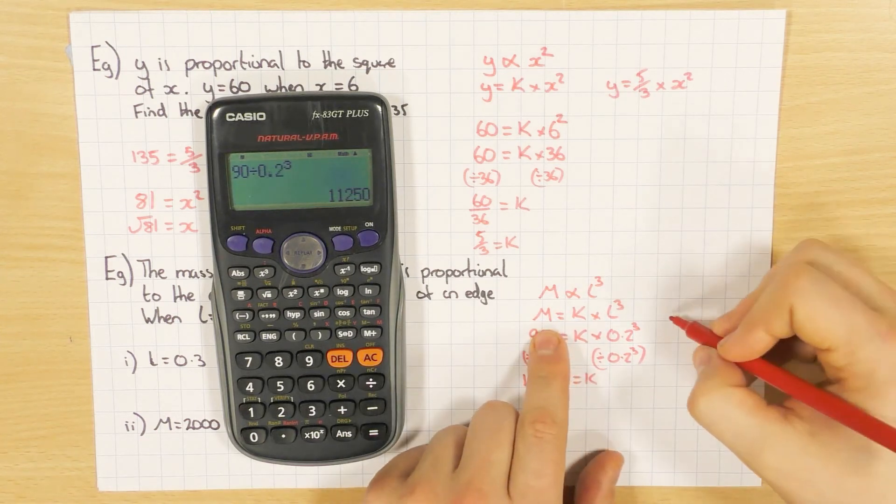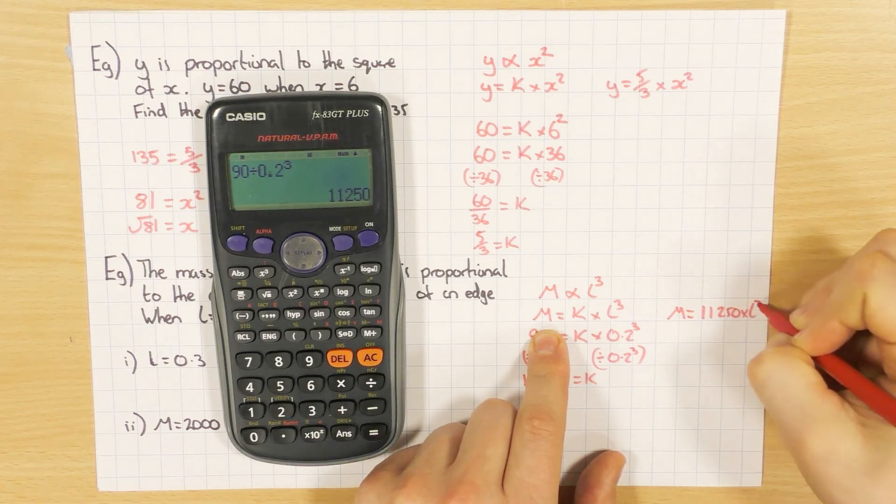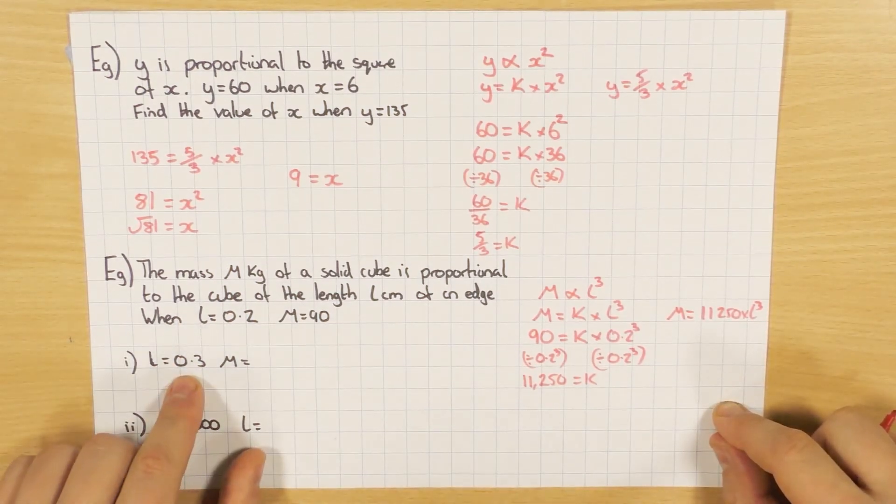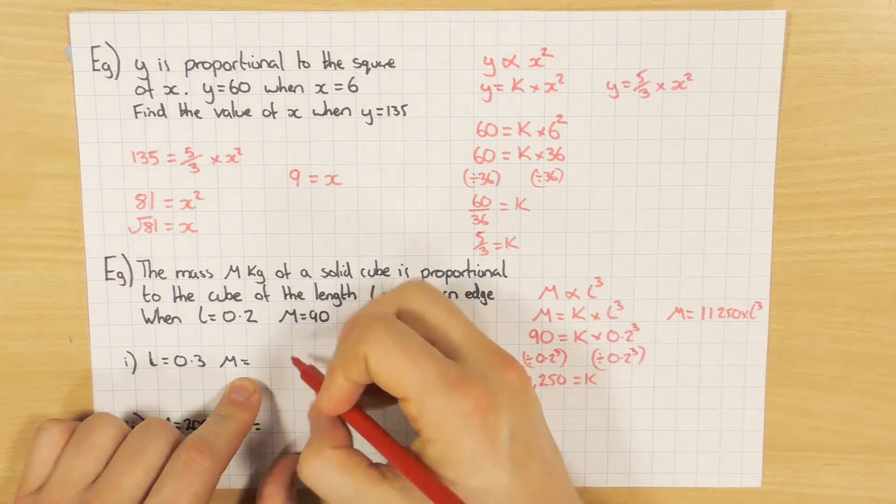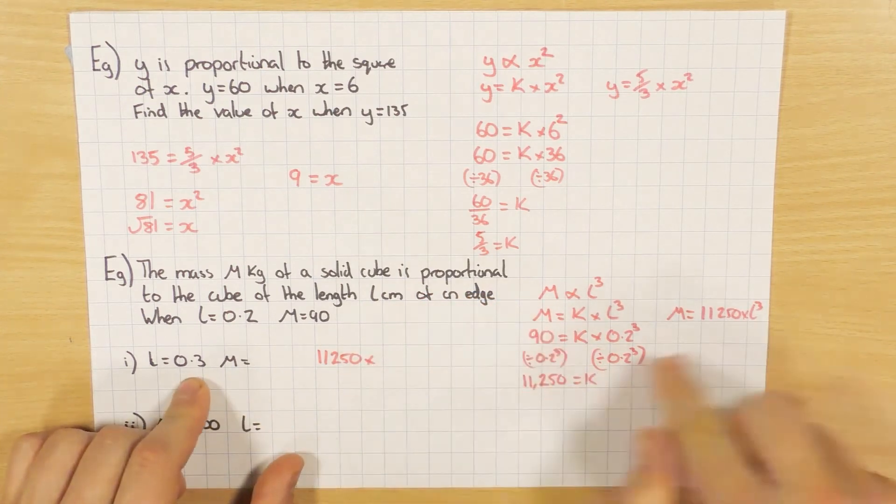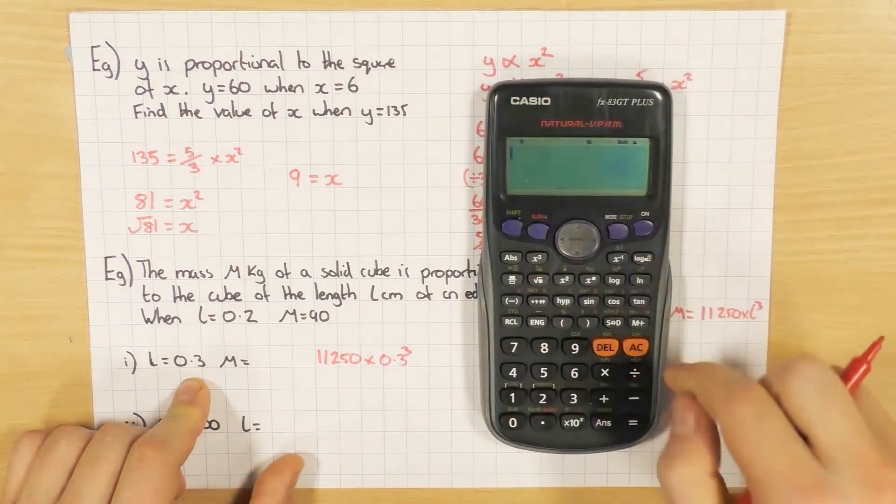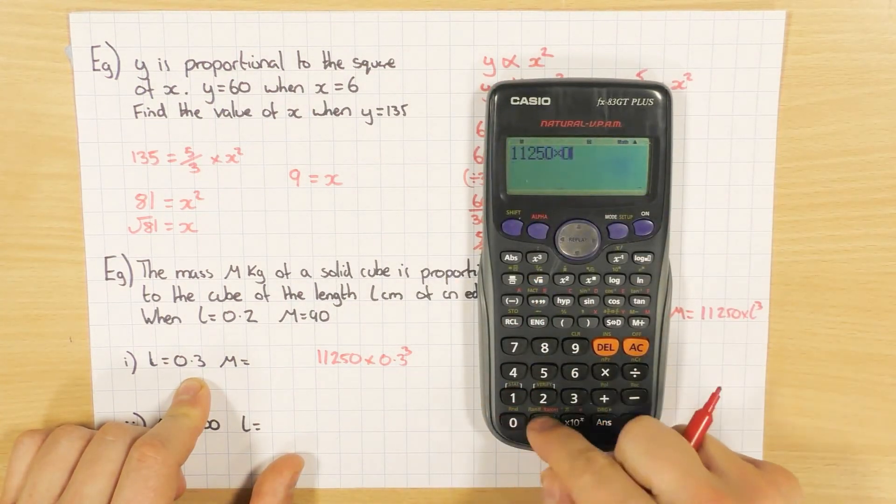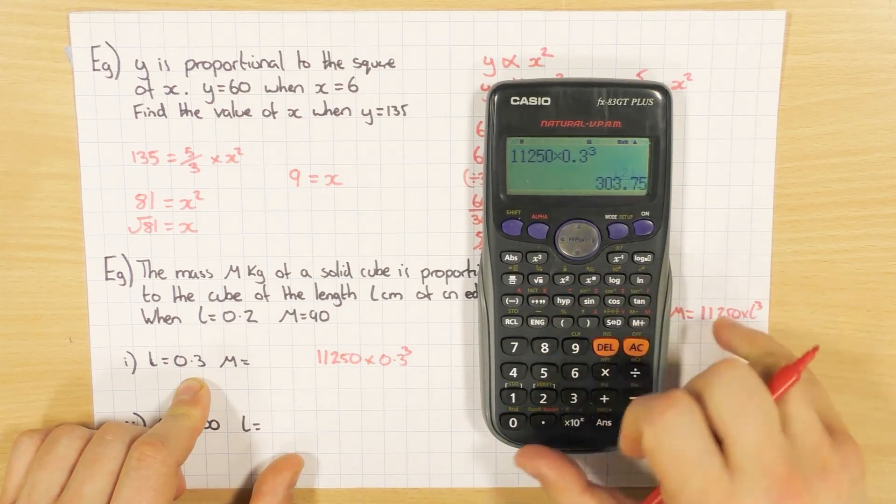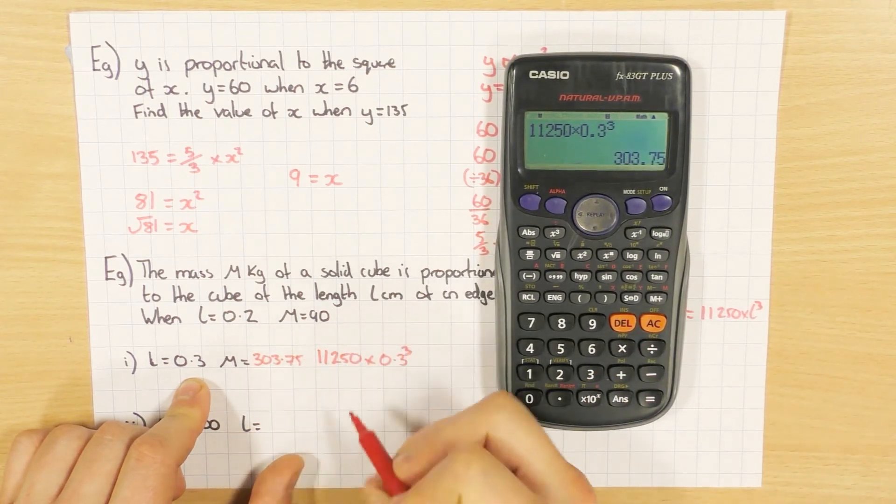Go back to our formula up here. m equals 11,250 times l cubed. Happy days. Two questions here. One, if l is 0.3, what is m? Well, let's substitute it in then. So m will equal 11,250 times by 0.3 cubed. Let's have a look what that gets us. Times 0.3 cubed. So that's 303.75. Happy days.